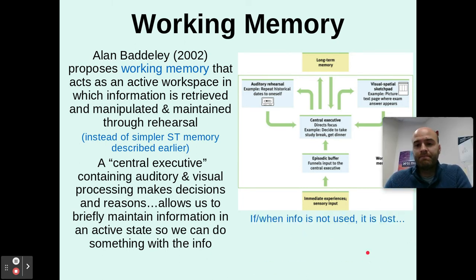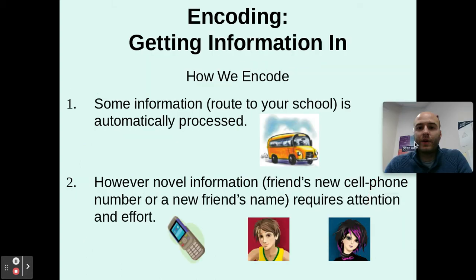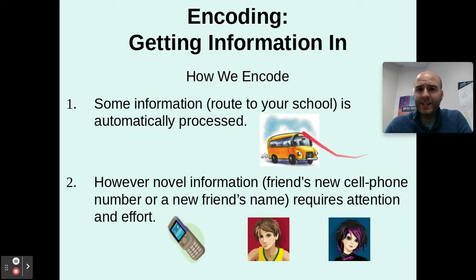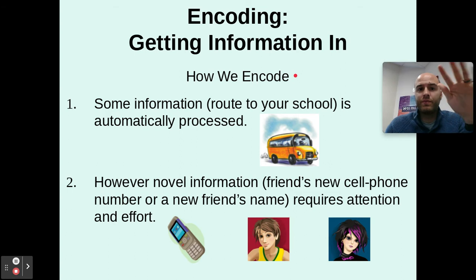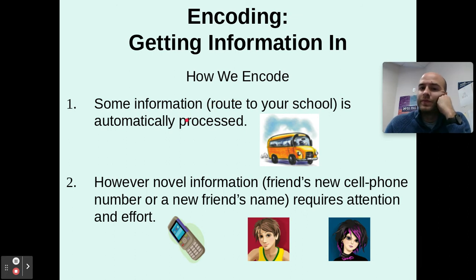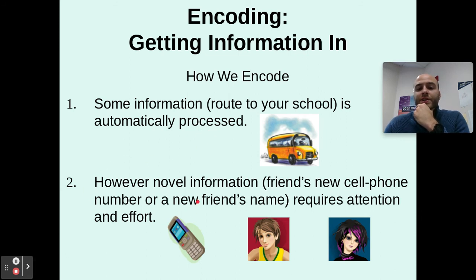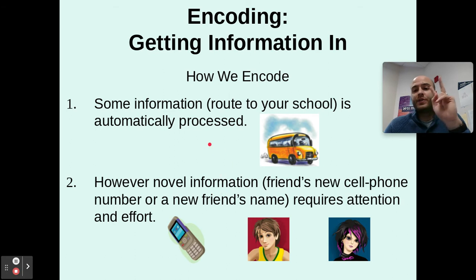If the information is not used, then it's lost. Now we come to encoding — how we get information into our brains and how we remember it. Some information, like your route to school, is going to be automatically processed. You pick up on that without really trying — that's known as automatic processing. However, some novel information, like a new cell phone number or a new friend's name, requires attention and effort — we call that effortful processing. So we're going to talk about those two types of processing to figure out how we encode information.